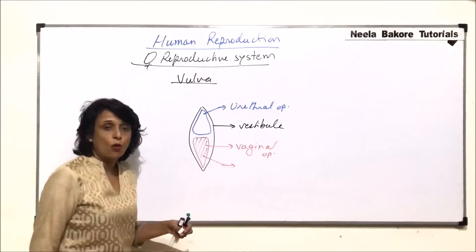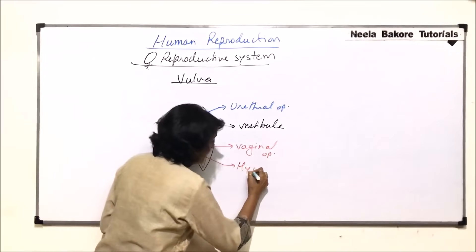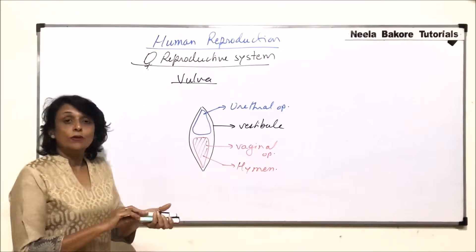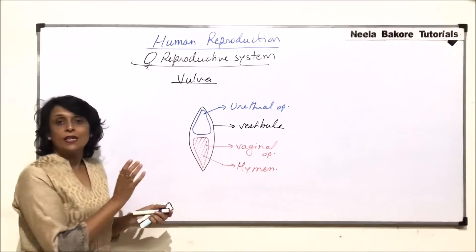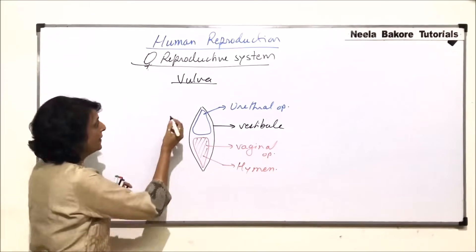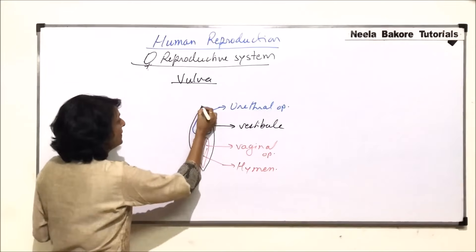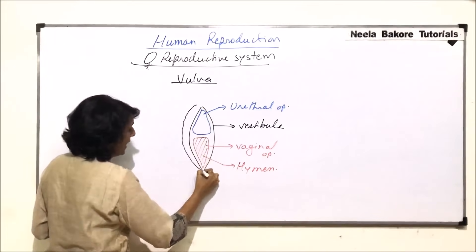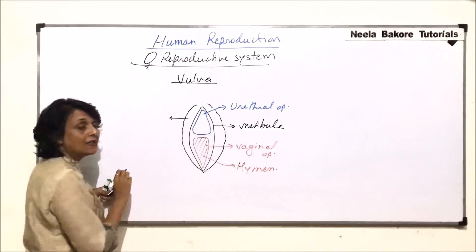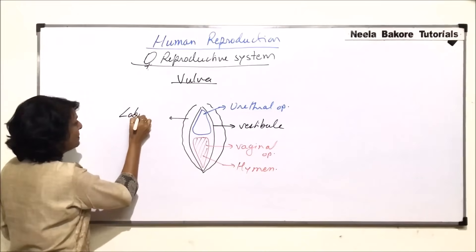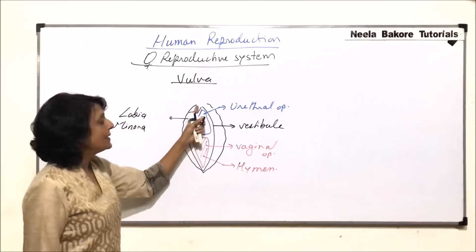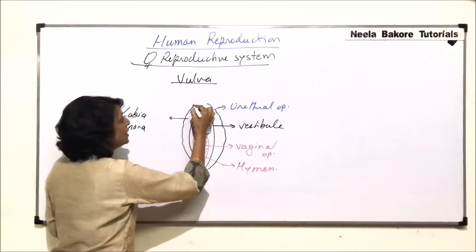The vaginal opening is covered with a thin membrane called the hymen in case of virgin females. This vestibule is guarded by folds of skin. There are two folds of skin; the inner fold is a smaller fold and these are mucous folds known as labia minora.